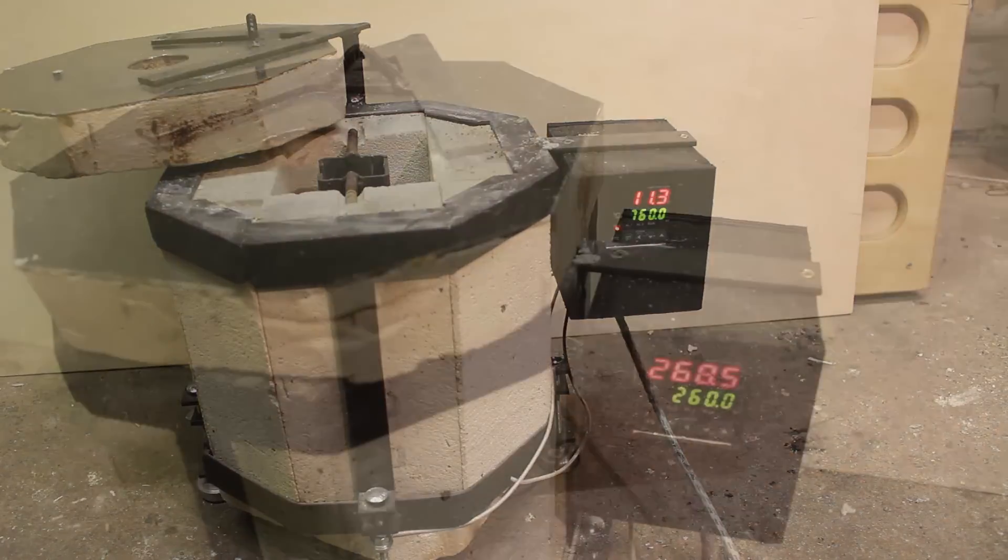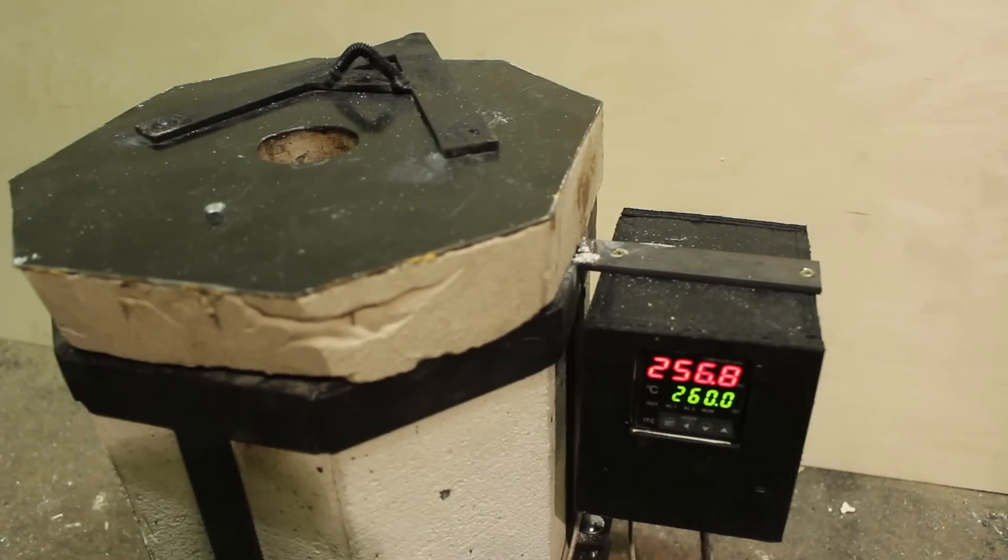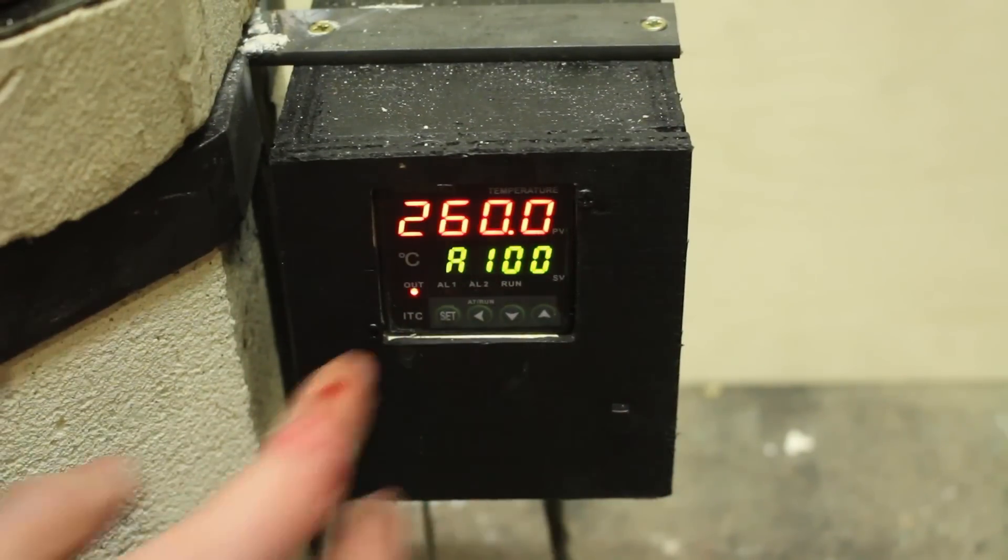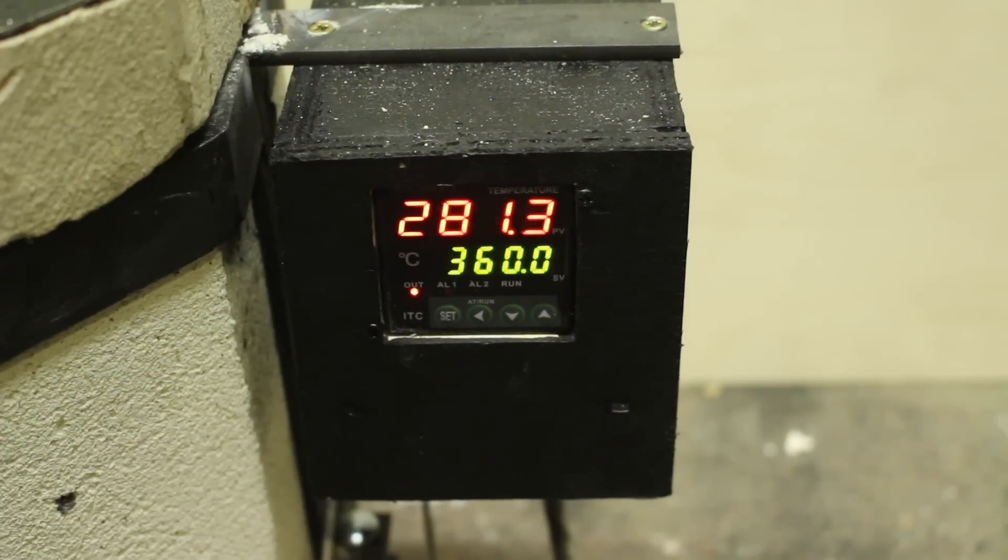This PID temperature controller coupled with a solid-state relay is able to control the temperature of the heating element to within 2 degrees anywhere between 0 and 1200 degrees Celsius. This is a massive improvement over the foundry before since before it was either turned on or turned off, and this means that you can melt your metals to a specific temperature to cast them.